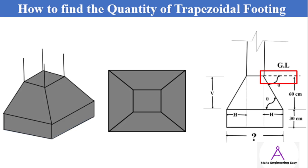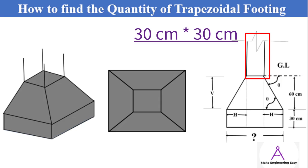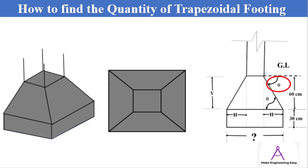Here the dotted line shows the ground level and the depth of the footing from the ground level is 60 cm plus 30 cm, equal to 90 cm. The column on the footing is 30 cm by 30 cm. The angle theta shows the angle of trapezoidal footing slope portion with the ground level. Here this theta is equal to that one.